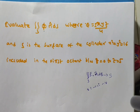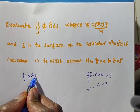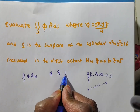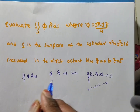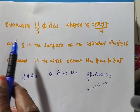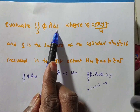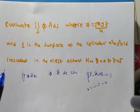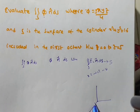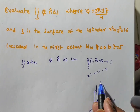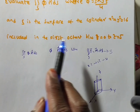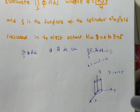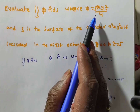Now I am going to solve this problem. To evaluate the double integral over S of φn̂ dS, we require the φ value, then the n̂ value, the surface, and the limits. The φ value is already given in the problem. Reading the problem: evaluate double integral over S of φn̂ dS, where φ = (3/4)xyz and S is the surface of the cylinder x² + y² = 16, included in the first octant between z = 0 and z = 5.